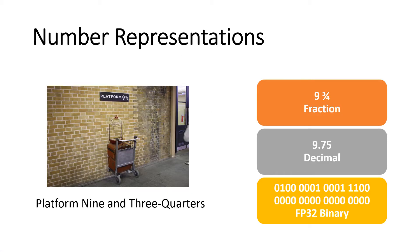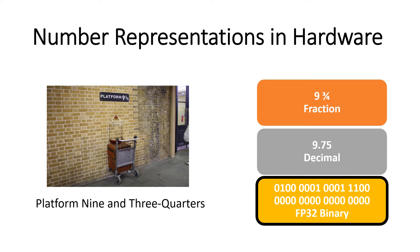At a very high level, there are multiple ways we can represent the same real number. For example, nine and three quarters can be represented as a fraction, a decimal, or a 32-bit binary number. In the context of digital design, a binary number itself can represent it in many different ways.